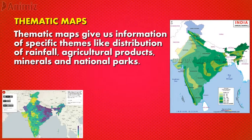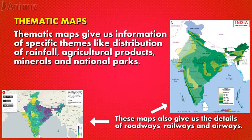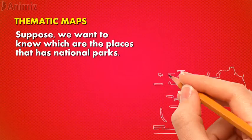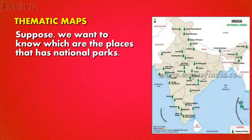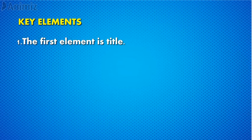Now let's talk about thematic maps. Thematic maps give us information on specific things like distribution of rainfall, agricultural products, minerals, and national parks. These maps also give us details of roadways, railways, and airways. For example, if we want to know which places have national parks, this thematic map will show us those places.